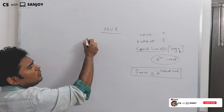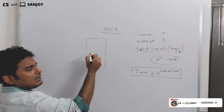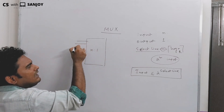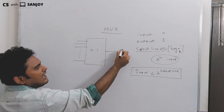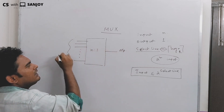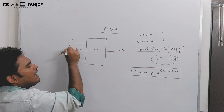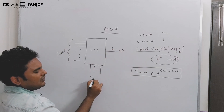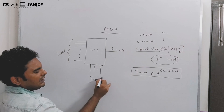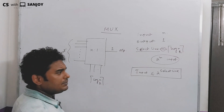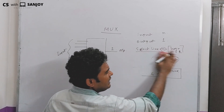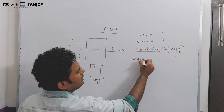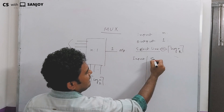Let's look at the block diagram of this multiplexer — an N-to-1 multiplexer. Input is N and output is 1. There are N inputs, only 1 output, and ceiling of log N base 2 select lines. We need to understand the relationship between input and select lines.